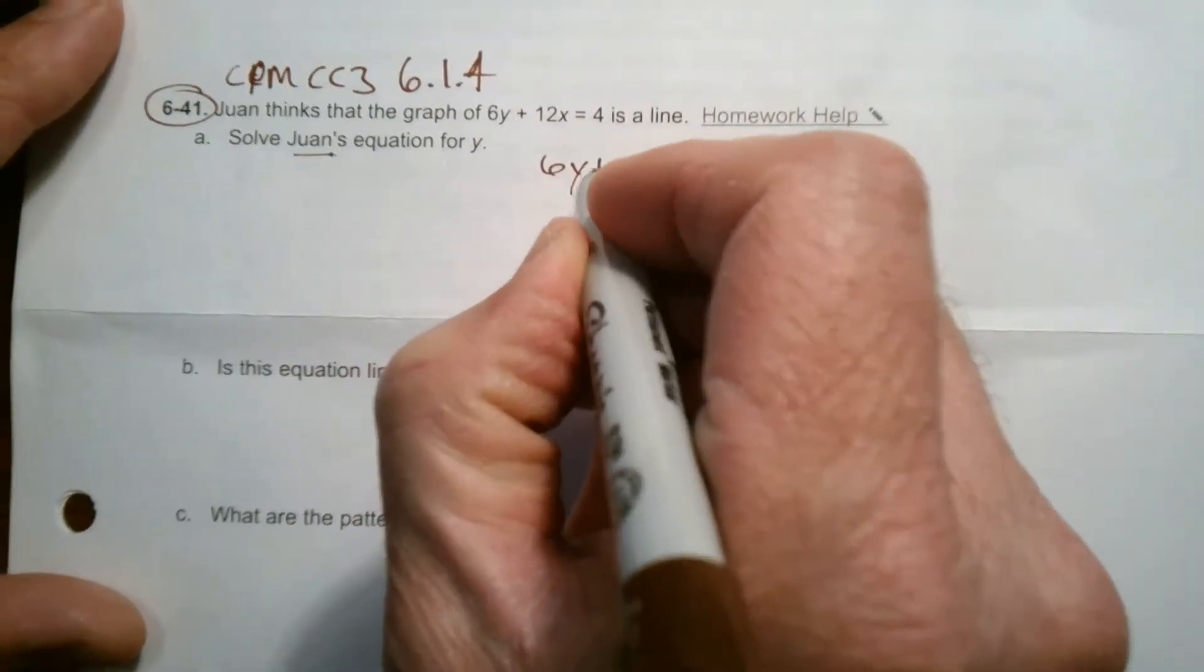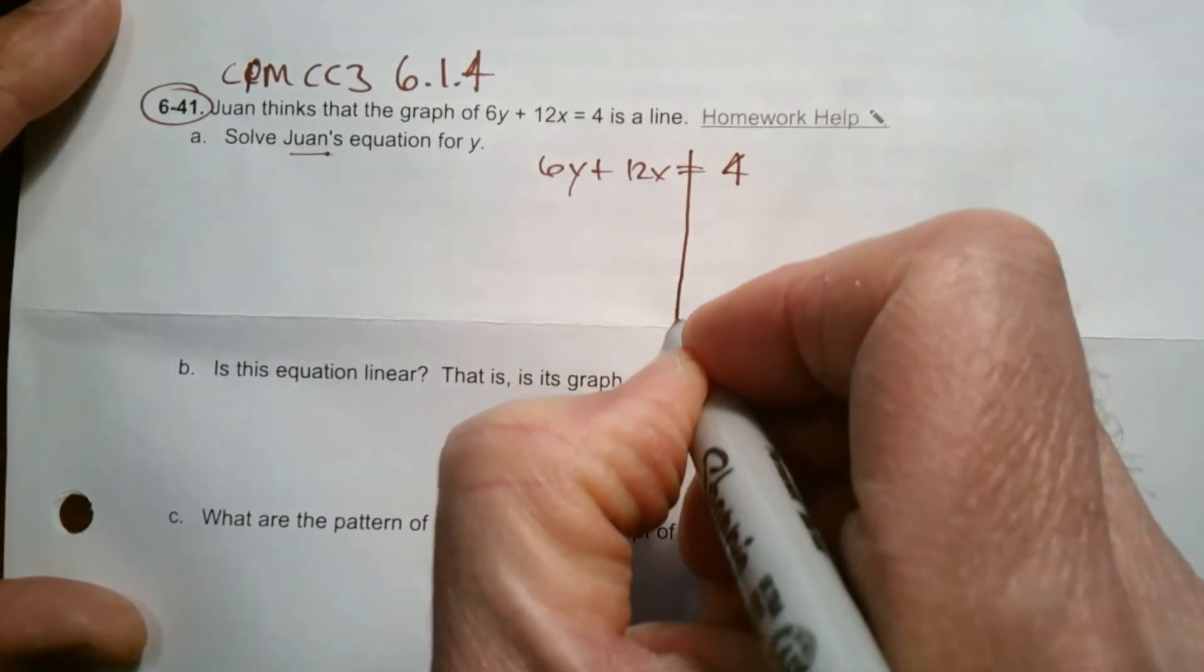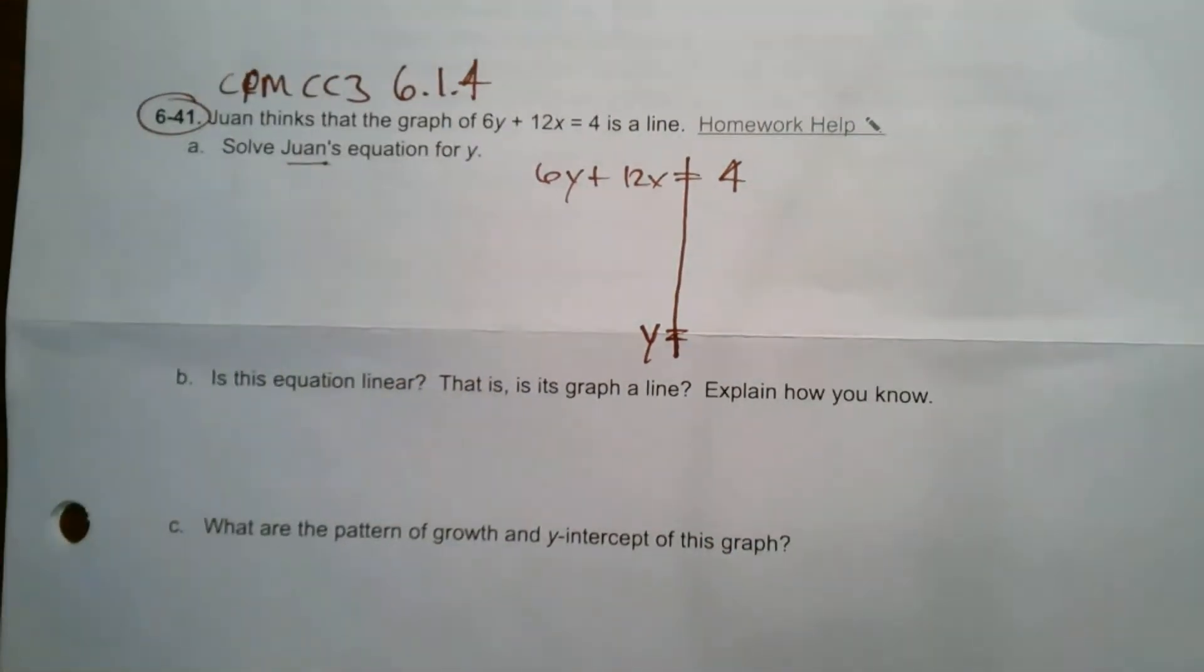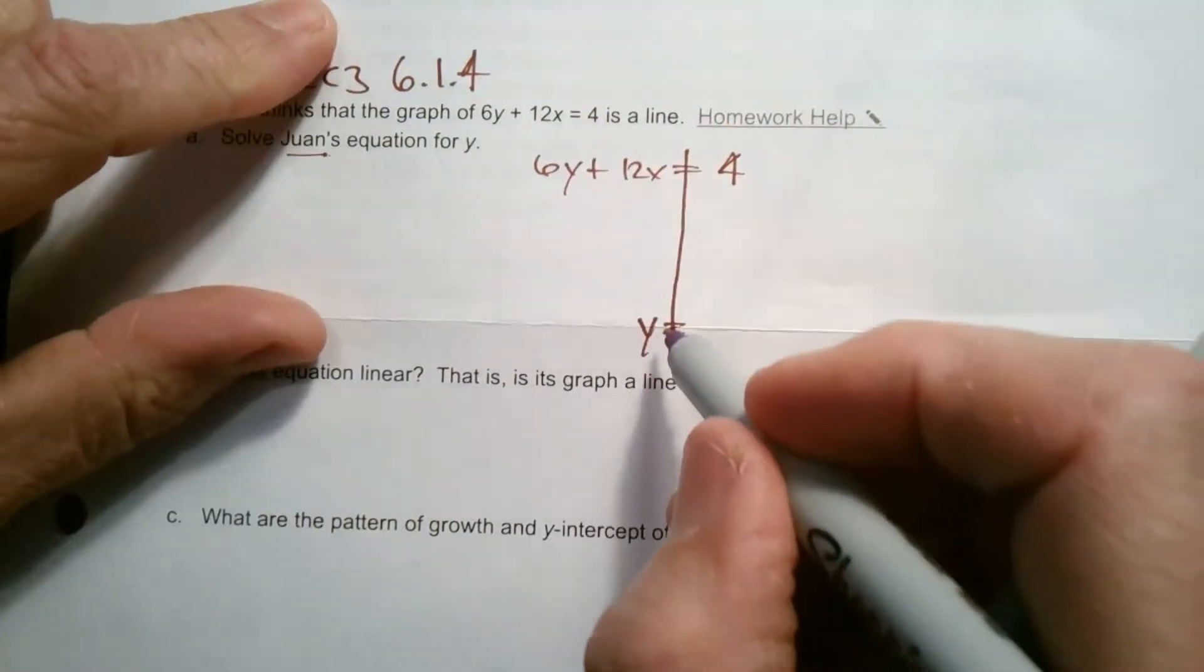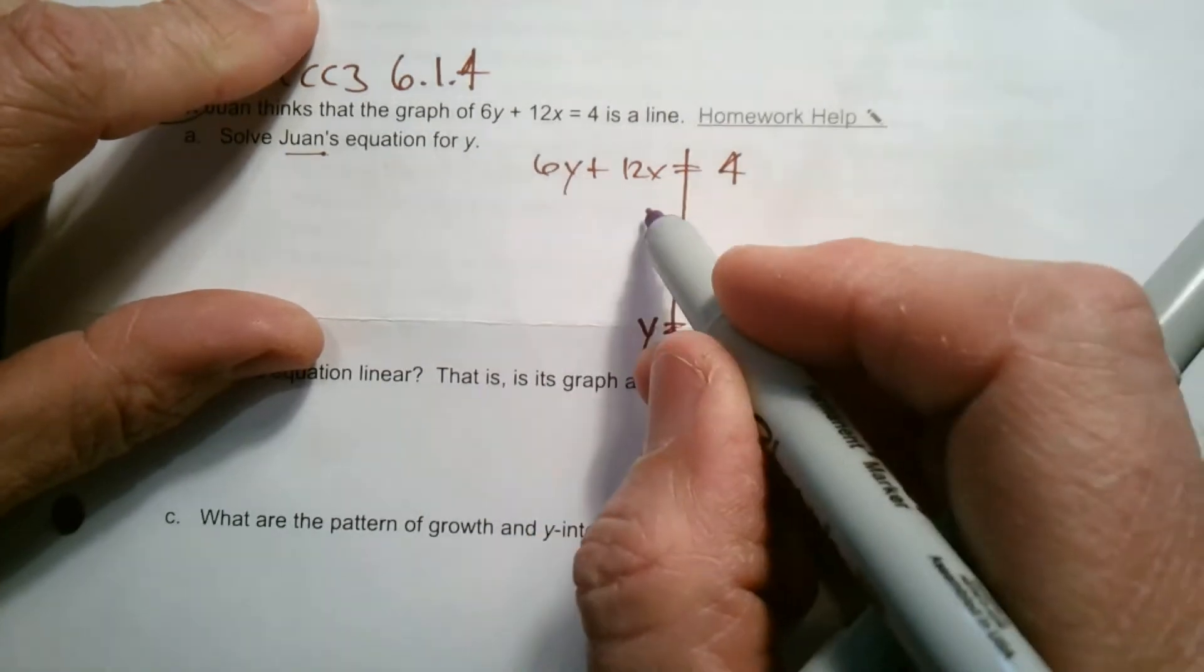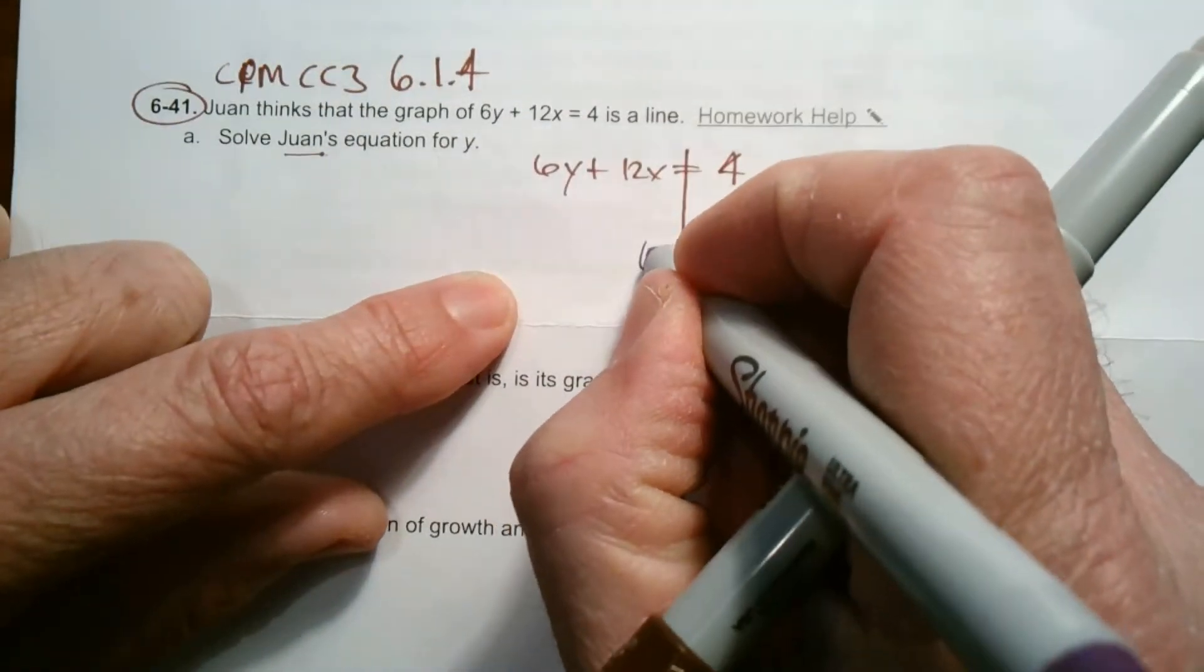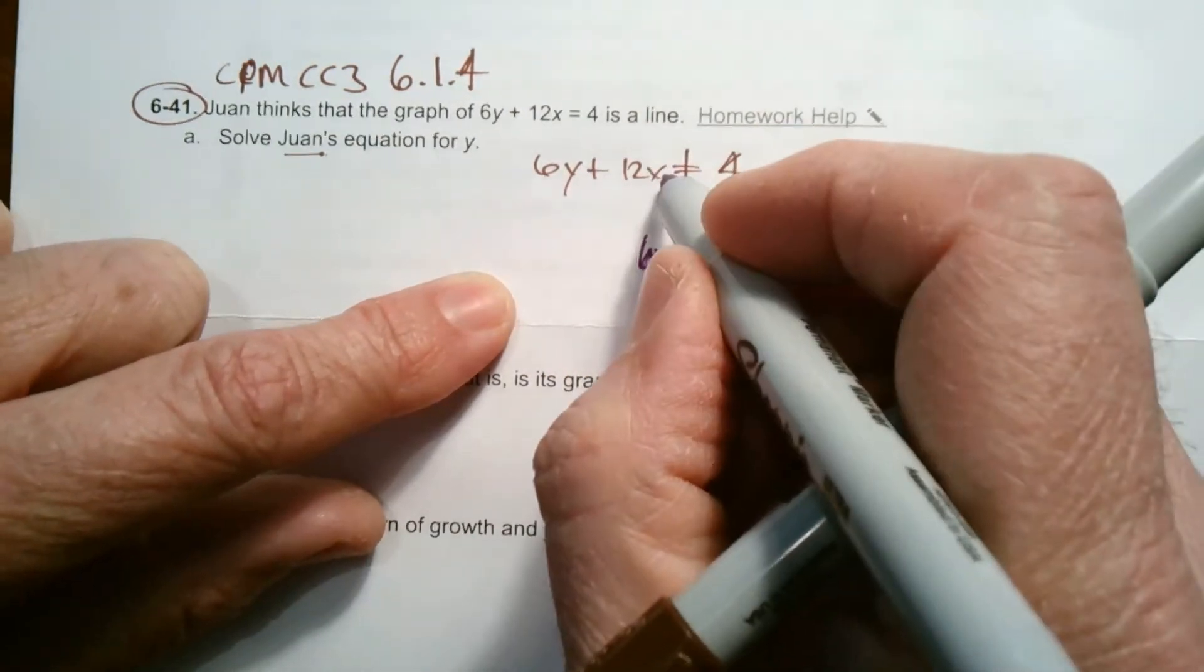That means take 6y plus 12x equals 4 and do the operations to get y all alone. To get y by itself, I've got to get rid of the 12x and the 6. What I tend to do is always try to isolate the variable term first, meaning get that 6y by itself first. So to do that, I've got to get rid of the 12x.